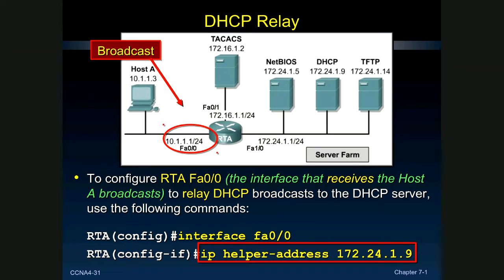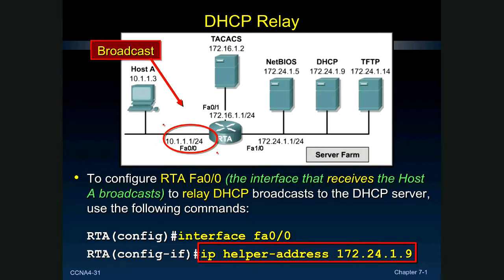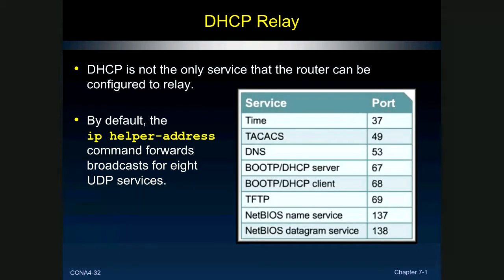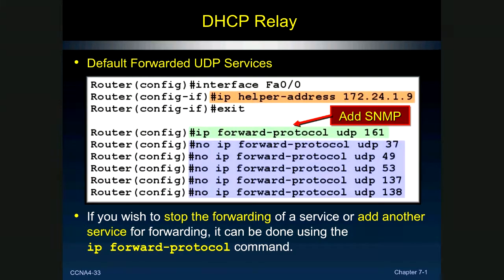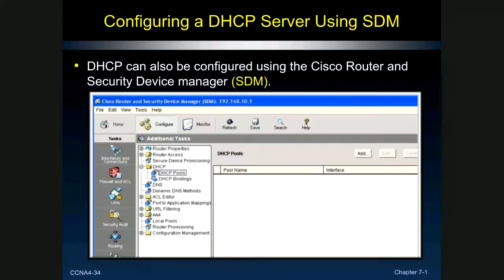To configure DHCP relay, go to the router's interface that receives the DHCP broadcast from clients — in this case Router A's FA0/0 port — and configure an IP helper address pointing to the DHCP server's IP address. When that interface receives a DHCP broadcast on port 67/68, it will convert it to a unicast and forward it to the server. This allows a host requesting an address like 10.113.x to reach a DHCP server at 172.24.1.9 several hops away.